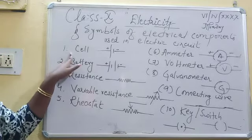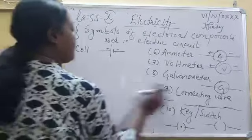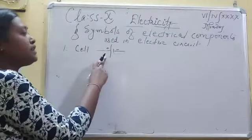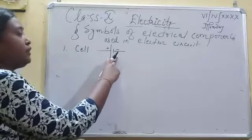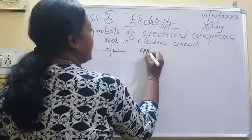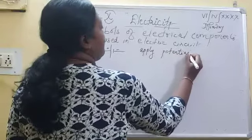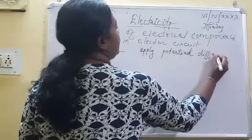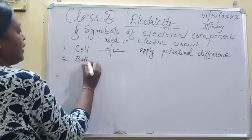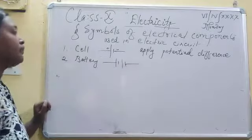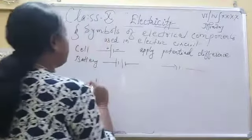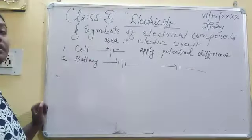Now let's see the function of each component. First, cell — what is cell? Cell is composed of two terminals, one is the positive terminal and one is the negative terminal. Its function is to apply potential difference in an electrical circuit. Next, battery — what is battery? Battery is the combination of two or more cells. The same function applies to the battery; the difference is in the value of the potential.